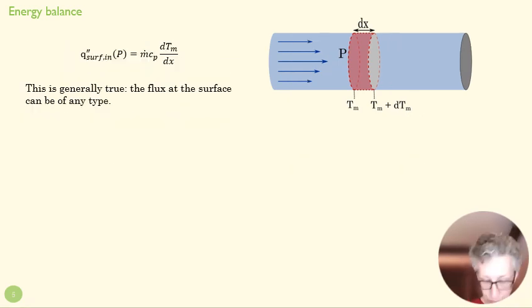And when we get rid of that dx, we have this equation up here. And this is generally true. We haven't made an assumption here about what kind of flux, a constant temperature or an unconstant temperature, is coming in from the side. We've just said that it's some kind of surface flux. So we've got a nice general equation here.